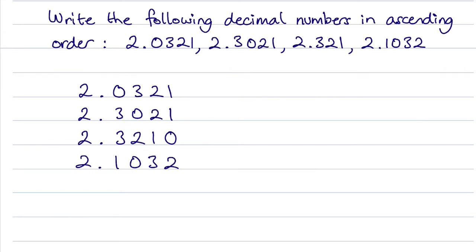Now I like to compare them from the first digit. They all start with twos, so I can virtually ignore that two. If I go to the next value we can see that one's got a zero, we've got a couple of threes and a one. So clearly this here is the smallest value.